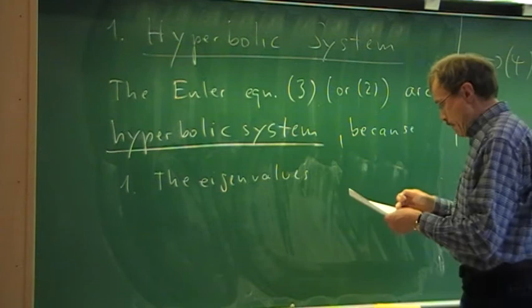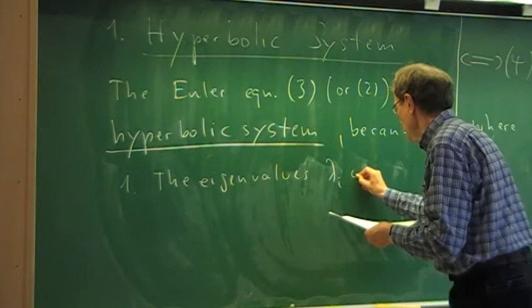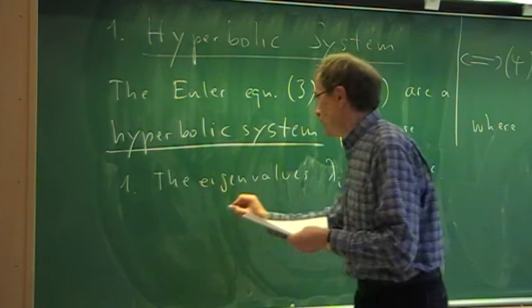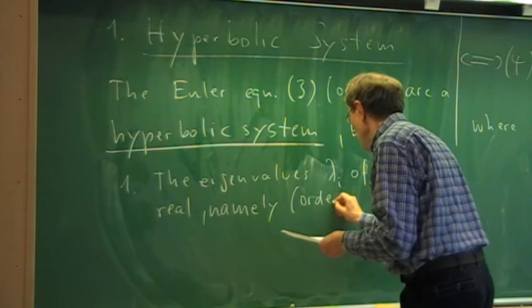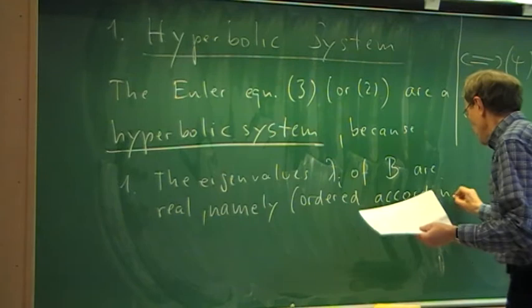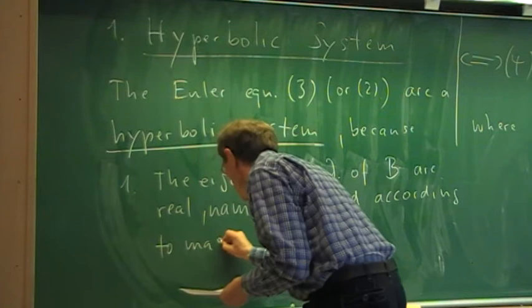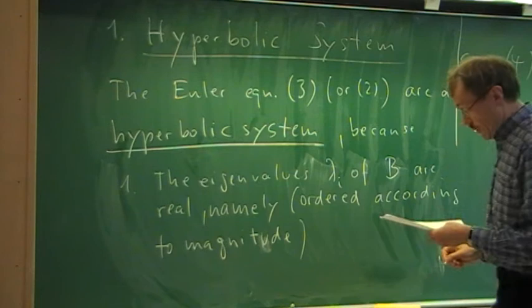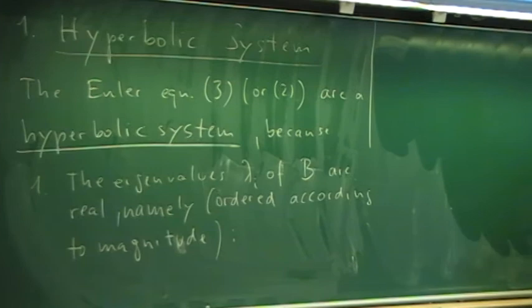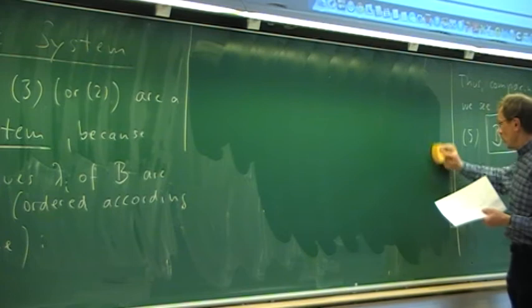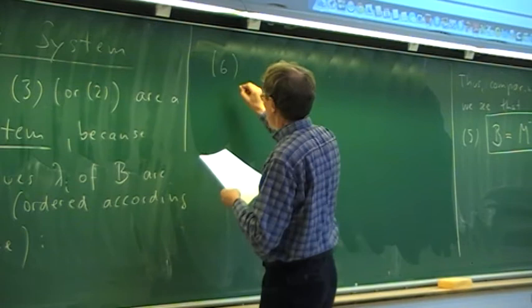The definition has two parts. The first part is that the eigenvalues lambda_i of B are real. In our case, ordering them by magnitude, the smallest is lambda_1 = u − c (velocity minus speed of sound), lambda_2 = u (the velocity itself), and lambda_3 = u + c (velocity plus speed of sound). These three eigenvalues are real because velocity and speed of sound are real quantities.